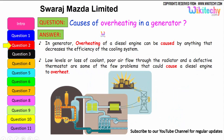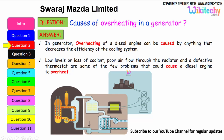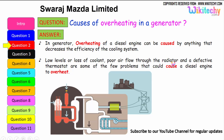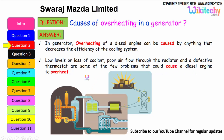Let us move on to the next question: causes of overheating in a generator. Overheating of a diesel engine can be caused by anything that decreases the efficiency of the cooling system. It can be due to loss of coolant, low levels of coolant, poor air flow through the radiators, or a defective thermostat — these are some of the problems that could cause a diesel engine or generator to overheat.